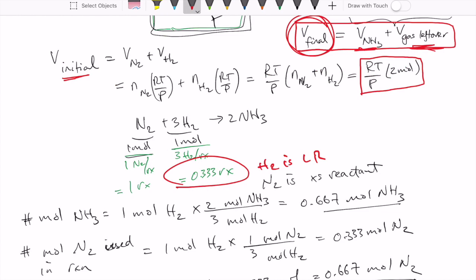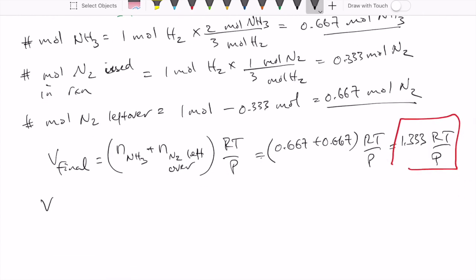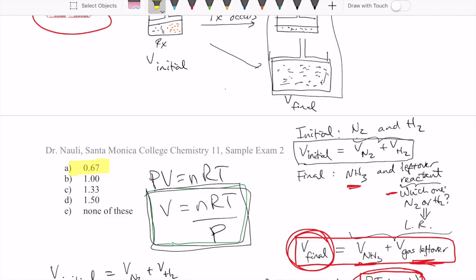Our initial volume was 2 times RT over P. So now we can calculate the actual answer that we're being asked, which is what is the ratio of the final volume to the initial volume? The final volume is 1.333 RT over P. The initial volume was 2 RT over P. These guys cancel out and you just get 1.333 divided by 2, which is 0.667 or 2 over 3. A would be the correct answer in this case.